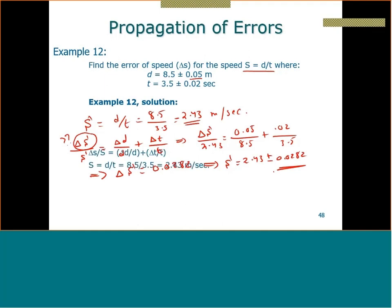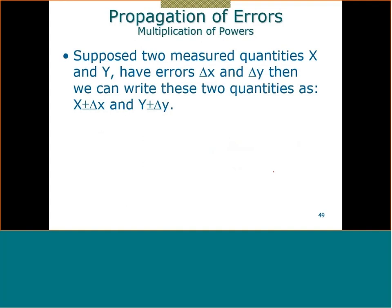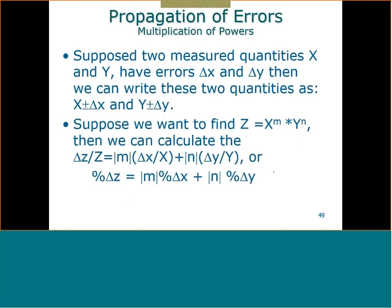The last case: what if we multiply or divide with a power? If z = xᵐ × yⁿ, then delta z / z = |m| × (delta x / x) + |n| × (delta y / y). You multiply by the absolute value of the exponent — the sign of the exponent doesn't matter. For division, z = xᵐ / yⁿ, which converts to xᵐ × y⁻ⁿ so the same rule applies.